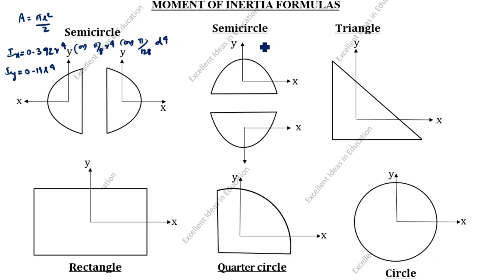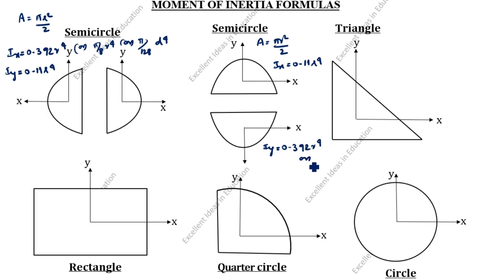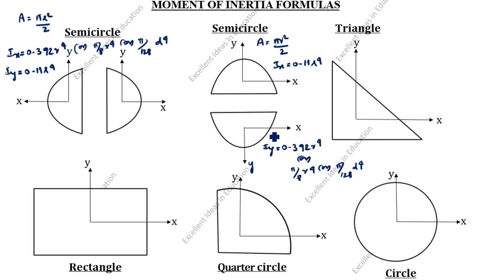This semicircle area is the same: pi r square by 2. What is the Ix formula? Ix is equal to 0.11 r power 4. What is the Iy formula? Iy is equal to 0.392 r power 4, or pi by 8 r power 4, or pi by 128 d power 4. You see the first semicircle and second semicircle formula. Ix equals 0.392 r power 4 in the first, but here Iy equals 0.392 r power 4. The position is different, that is why the formula is different for the first and second semicircle.